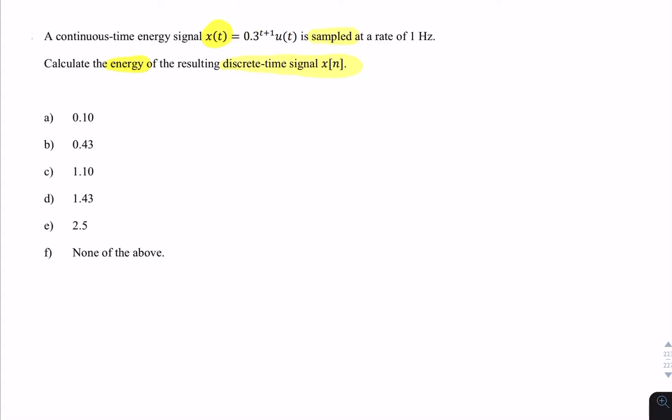There are two stages to this question. The first stage is the sampling stage going from continuous time to discrete time. That's stage 1. And then the second step is to calculate the energy, Ex. So first we find the discrete time signal, then we find the energy.